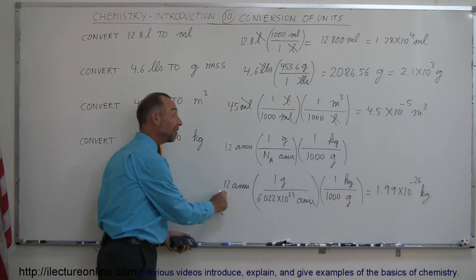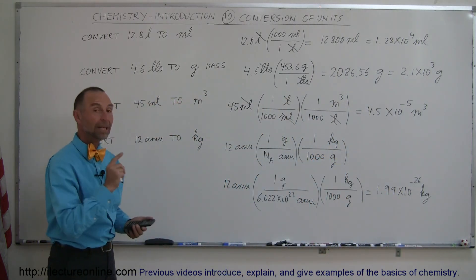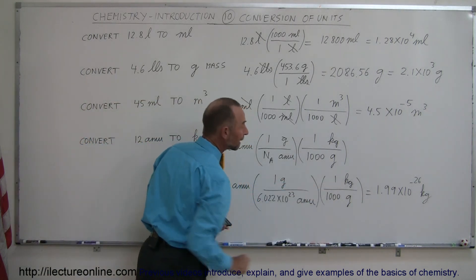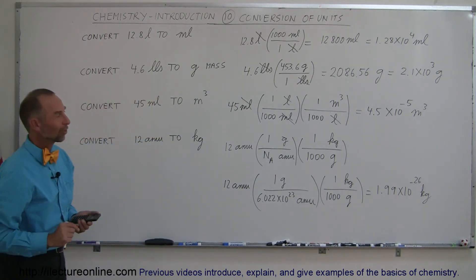Remember, 12 AMUs was the exact mass of a single carbon atom, a carbon-12 atom, which means that a carbon-12 atom has a mass of 1.99 times 10 to the minus 26 kilograms.